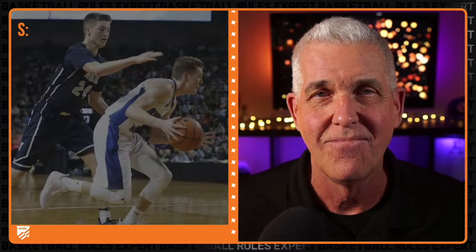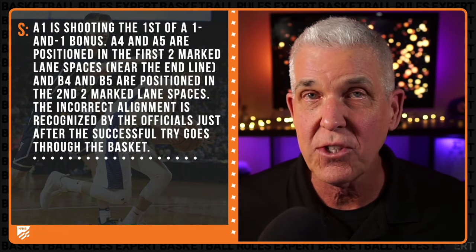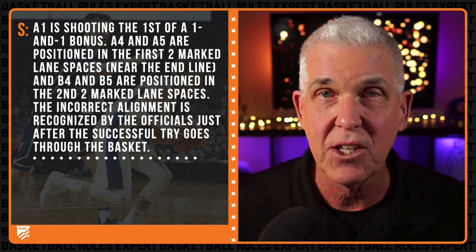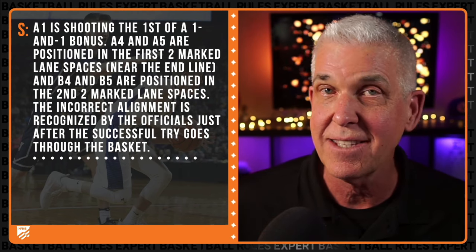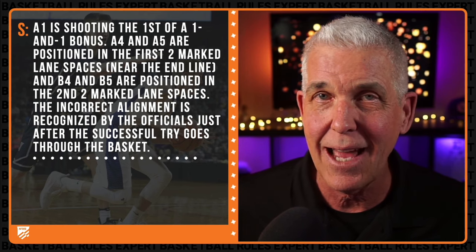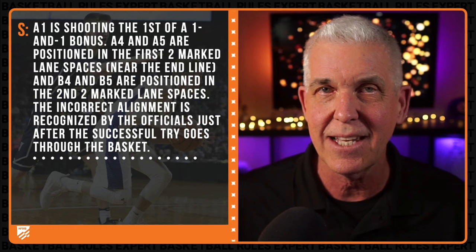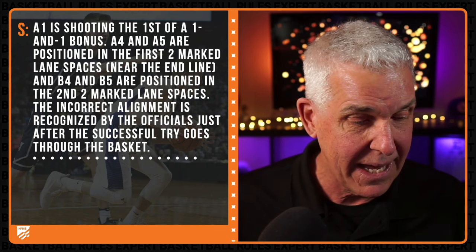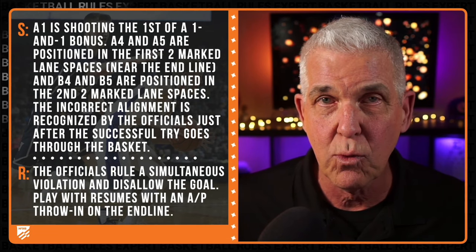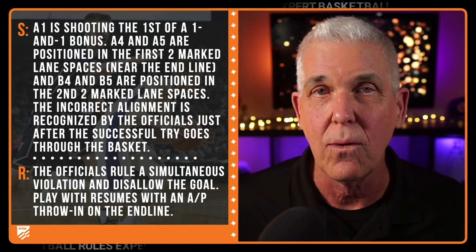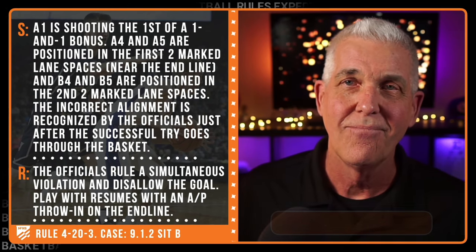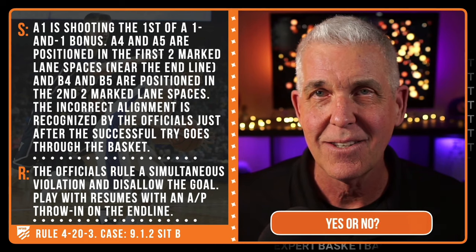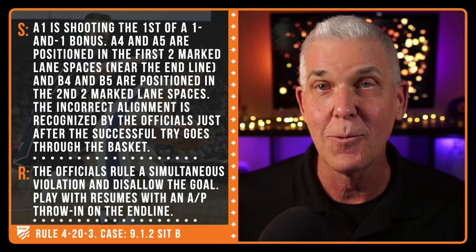Let's take a look at another free throw scenario. A1 is shooting the first of a one-on-one bonus. A4 and A5 are positioned in the first two marked lane spaces near the end line, and B4 and B5 are positioned in the second two marked lane spaces. The incorrect alignment is recognized by the officials just after the successful try goes through the basket. The officials rule a simultaneous violation and disallow the goal. Play will resume with an AP throw-in on the end line. Were the officials correct? Yes or no?